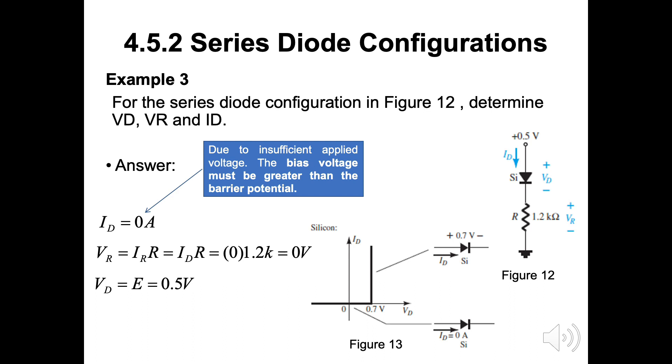Example 3, for the series diode configuration in figure 12, determine VD, VR, and ID. Refer to approximate model for the silicon. As the power source in 0.5V the VD is 0. Figure 13 shows when VD is 0.5V the current ID is 0. This is due to insufficient applied voltage. The bias voltage must be greater than the barrier potential. Therefore, as ID is equal to IR in this case, VR is 0V. For the VD finally is equal to E as 0.5V.